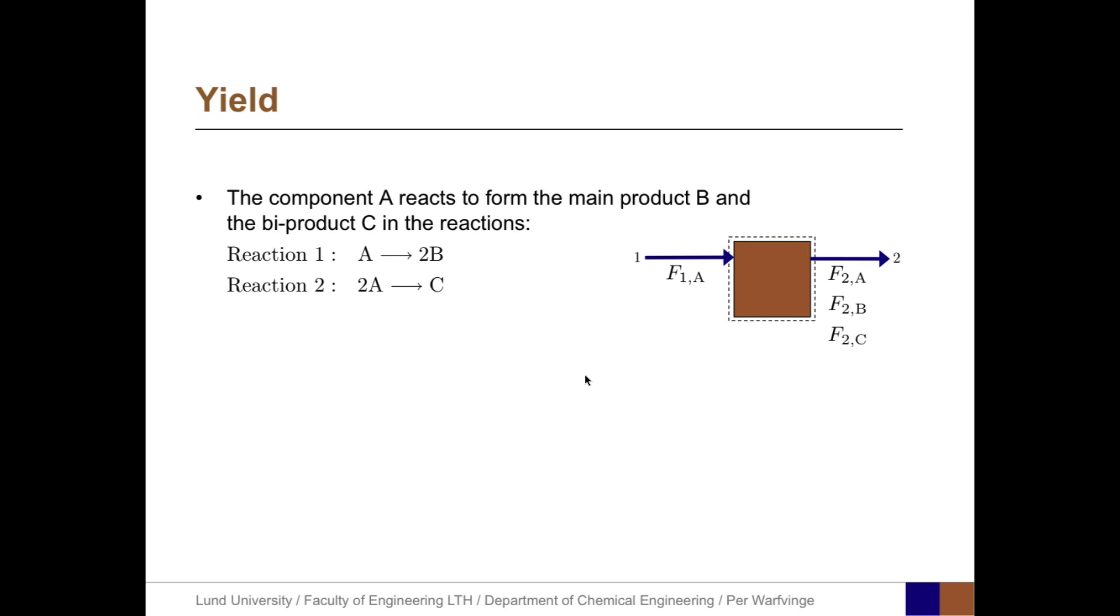The yield. Again, let the component A react to form the main product B and the byproduct C, just in the previous definition of conversion. The yield quantifies a fraction that is converted to the desired product in relation to the maximum theoretical conversion.